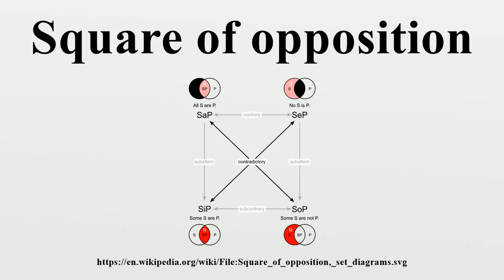Every categorical proposition can be reduced to one of four logical forms. These are: the A Proposition, the universal affirmative, whose form in Latin is 'omne s est p', usually translated as 'every s is a p'; the E Proposition, the universal negative, Latin form 'nullum s est p', usually translated as 'no s is p'; and the I Proposition, the particular affirmative, Latin 'quoddam s est p', usually translated as 'some s is p'.